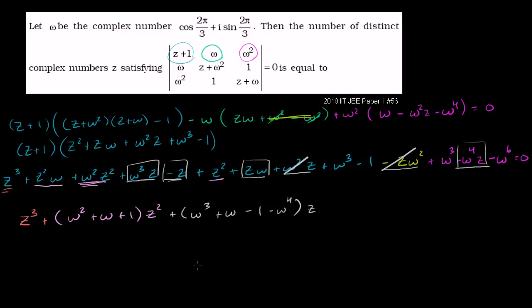What's left are the constant terms from a z perspective: we have 2·omega cubed, minus omega to the sixth, and minus 1. All of this needs to equal 0.